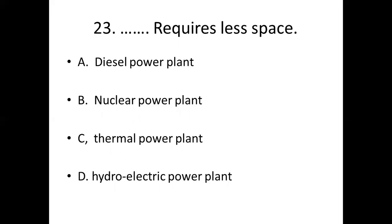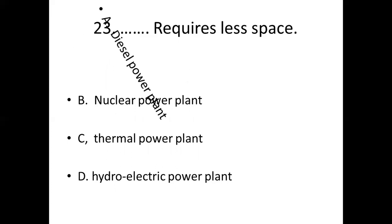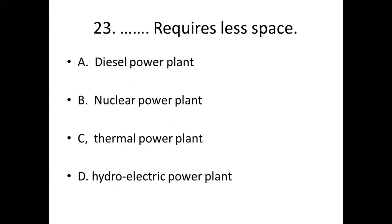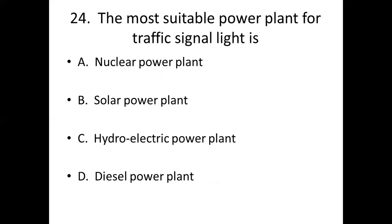Twenty-third bit. Dash requires less space. Option A: Diesel power plant. Option B: Nuclear power plant. Option C: Thermal power plant. Option D: Hydroelectric power plant. Answer: Option A, Diesel power plant.